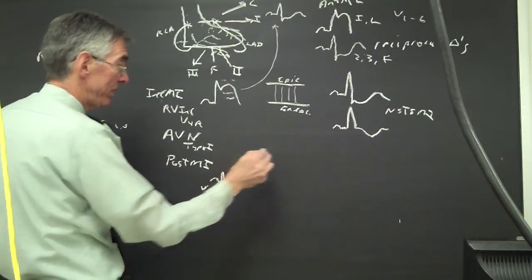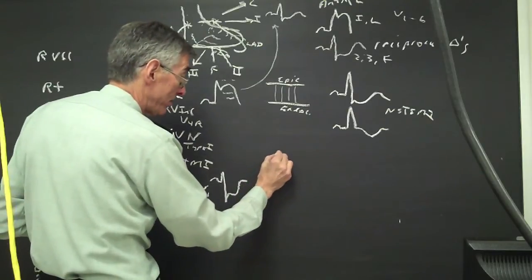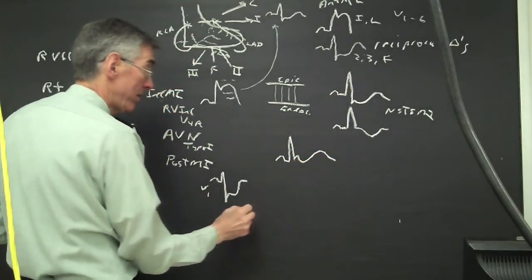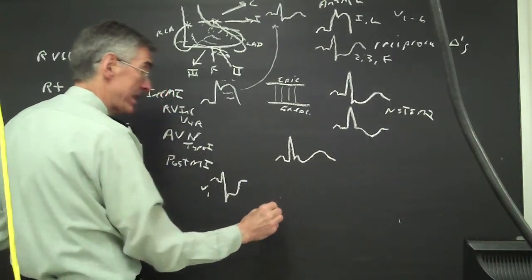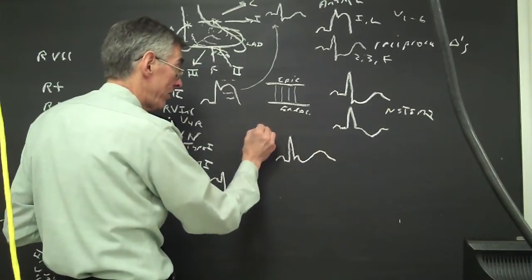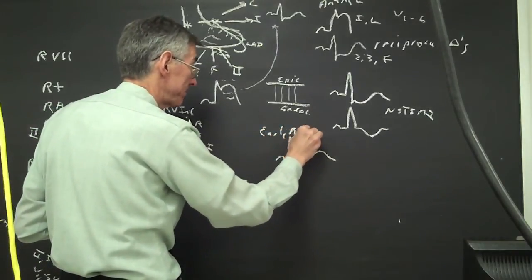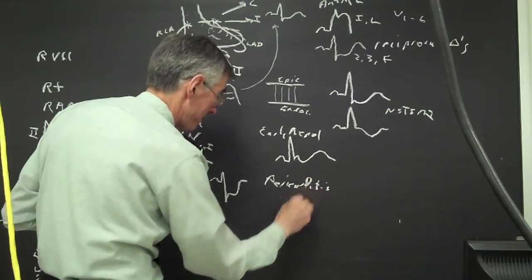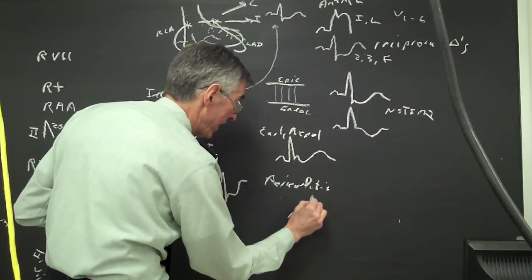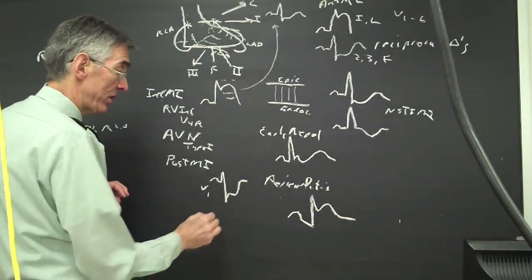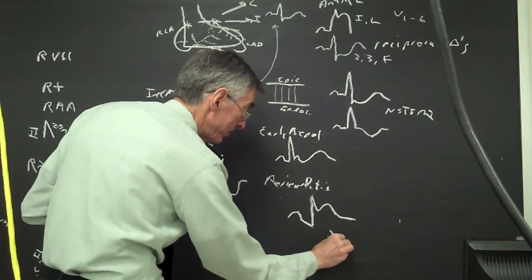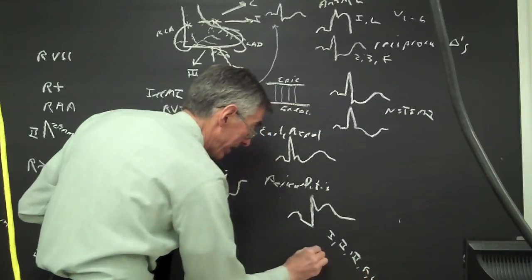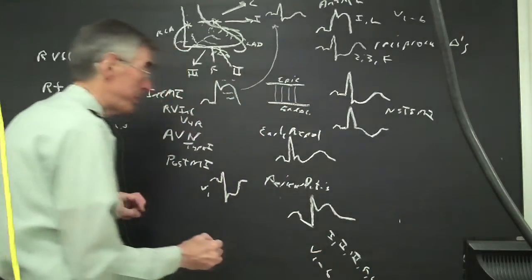All this ST elevation is not myocardial infarction. Sometimes we can get a J here like this with early repolarization. We can also see global ST elevation in pericarditis. This is early repol. We see pericarditis in which we see PR depression, ST elevation, and we get the combination in multiple leads, which is one, two, three, F, sometimes L, and across the precordial V1 through V6 for pericarditis.